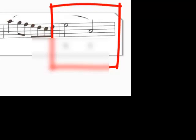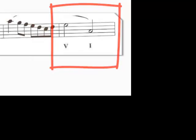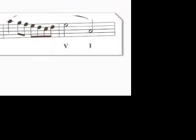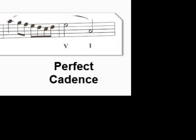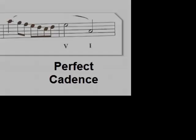Now let's look at the last cadence. The last chord has the notes C, E, and G. The root of the chord is C, which is a I chord in C major. The half note G is the root of the G-B-D chord, which is a V chord in C major. So our final cadence is a perfect cadence in C major.